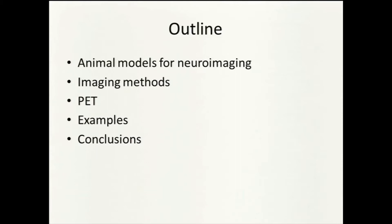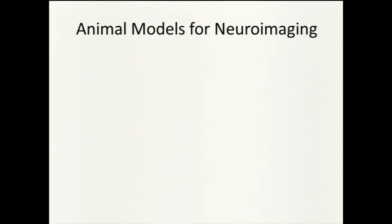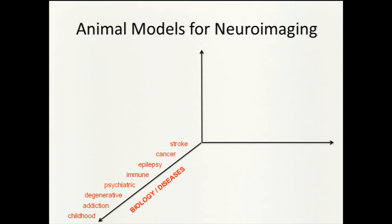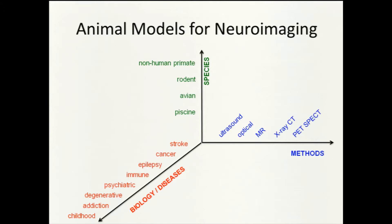To begin with animal models for neuroimaging — it's a rather daunting title. I think of this as a three-dimensional space to explore. On one axis might be the biology and pathologies of interest. On another axis, the species of animals we might want to use. And on the third axis, the methods we can use to look at the brain in these animal models.